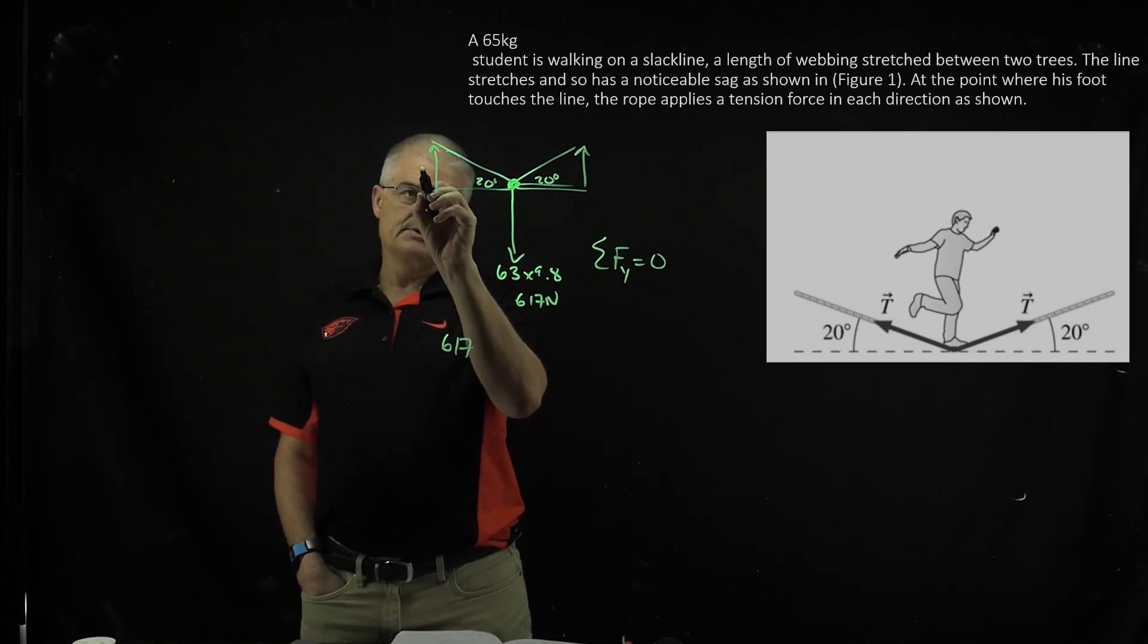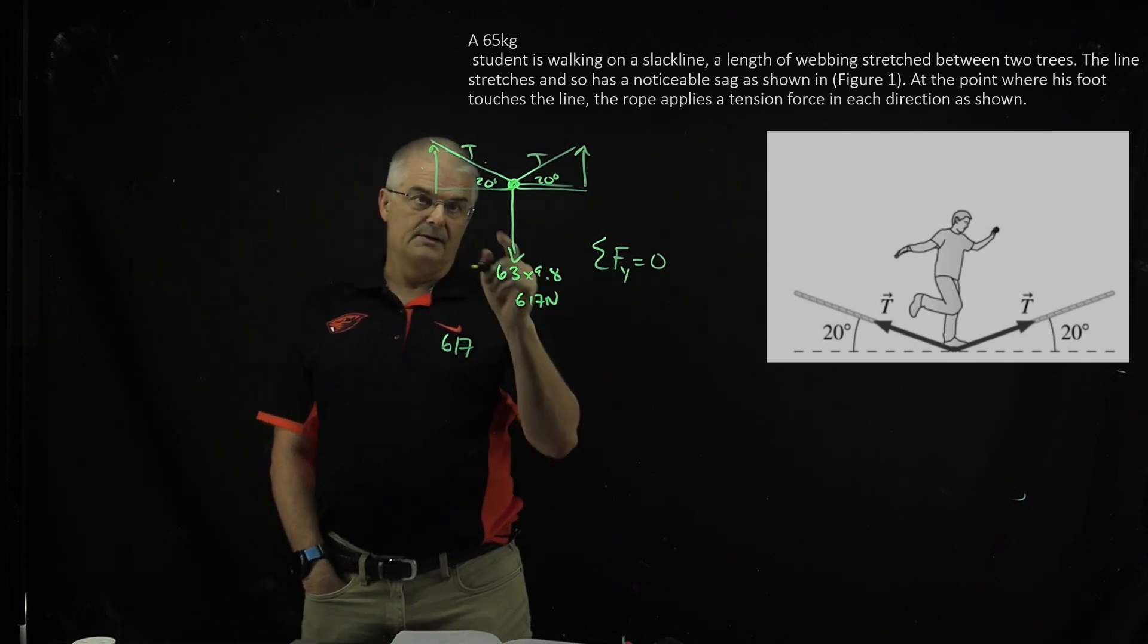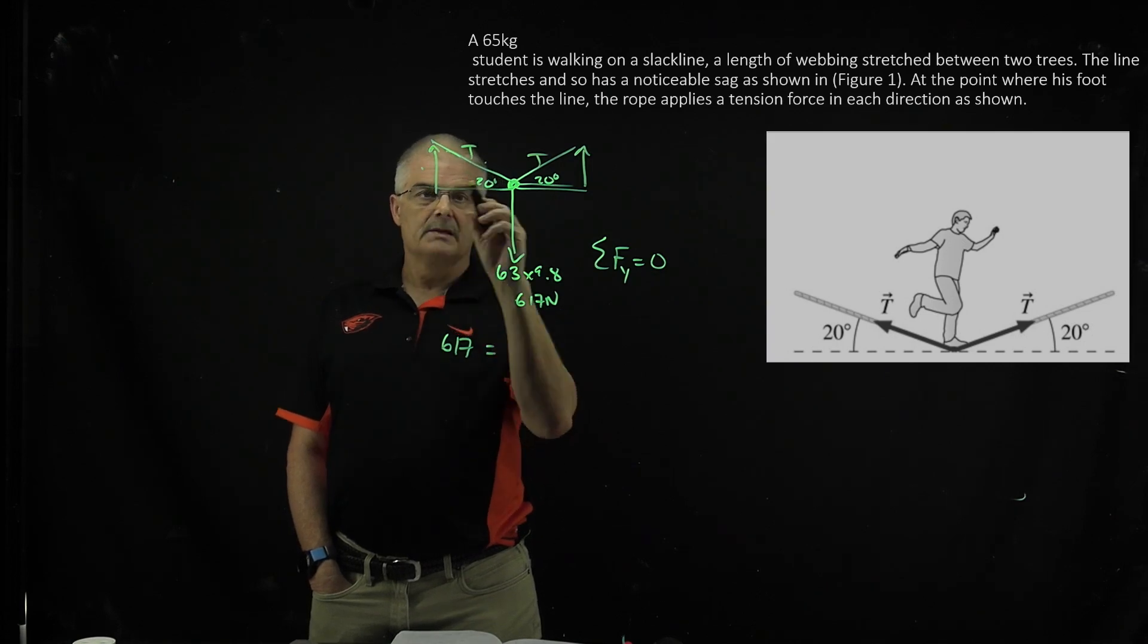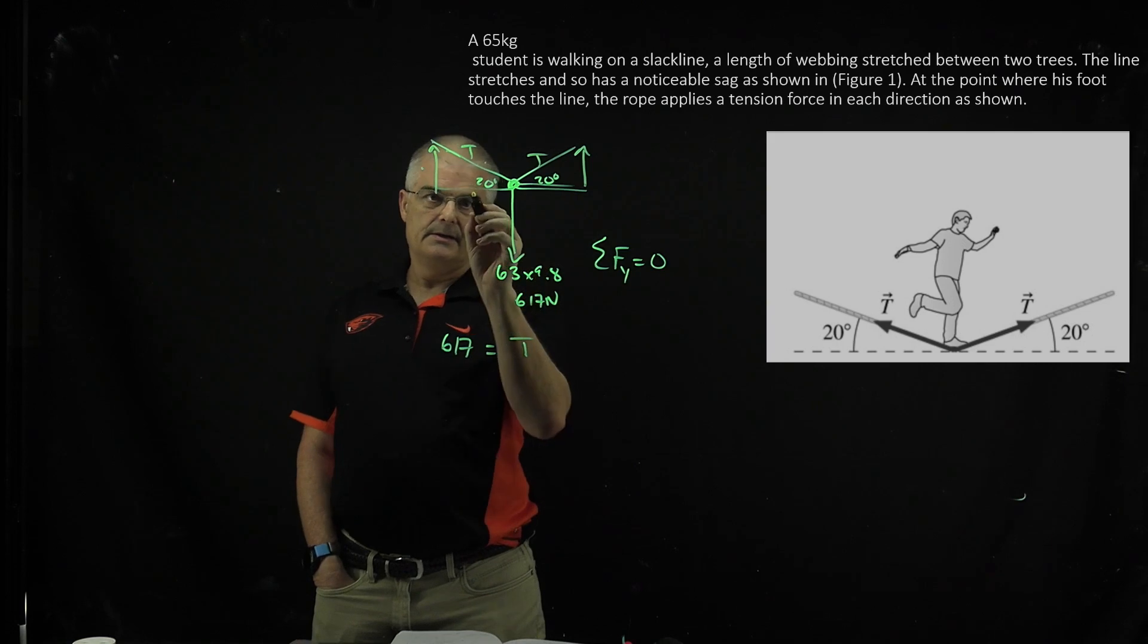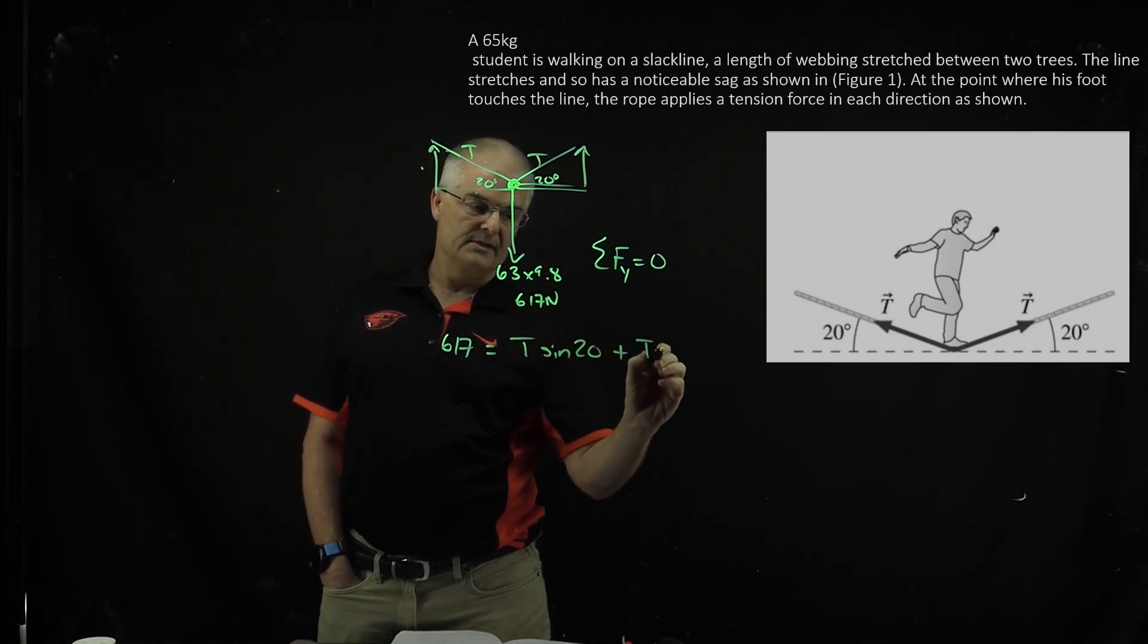So this is the opposite and this is the hypotenuse, this is T and this is T, they're the same tension. And so I can say this will be 617 will be equal to T, that's adjacent, sine 20, plus T sine 20.